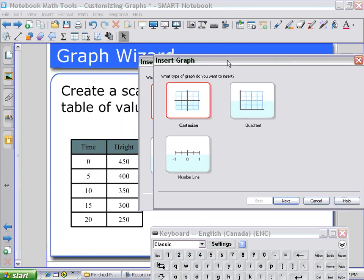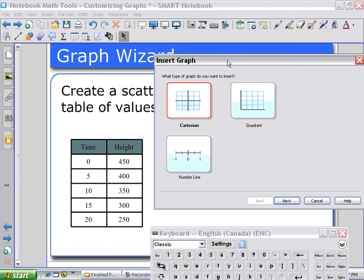And now, the decision making the students will go through as they look at the table values. First of all, since it starts at 0, I may only need a quadrant graph rather than a Cartesian graph.